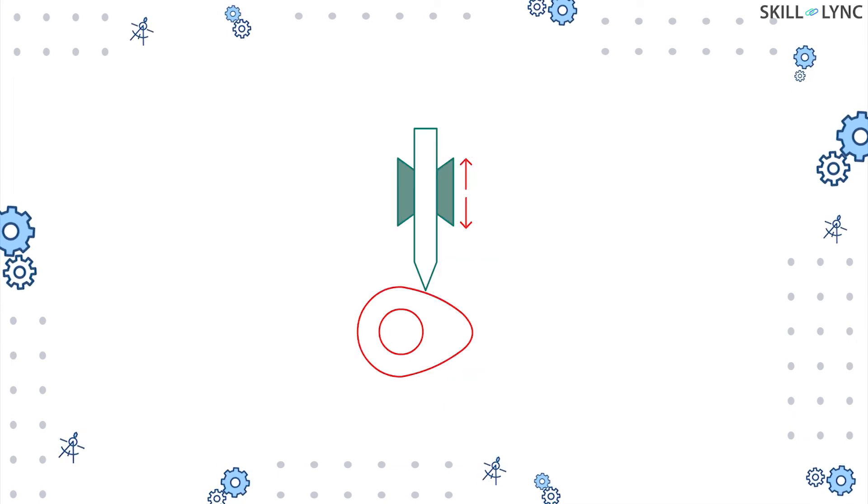Whereas, if the axis of the follower is at an offset from the center of the cam, then it is said to be the offset follower.